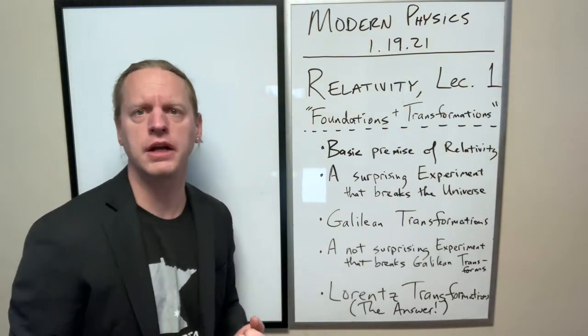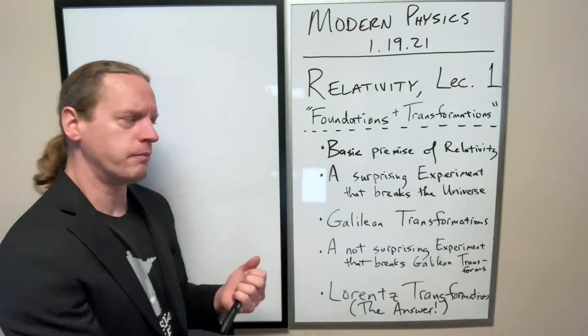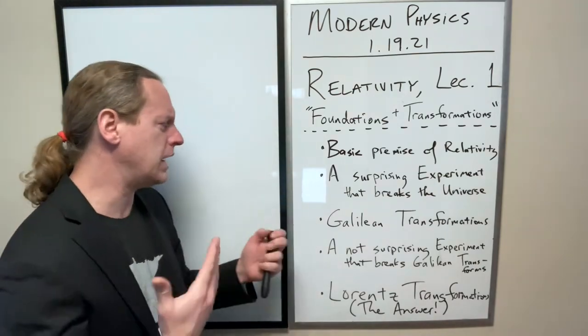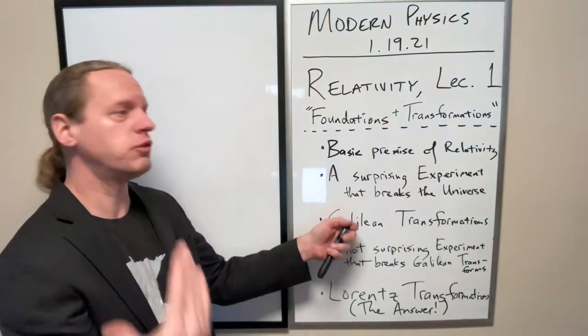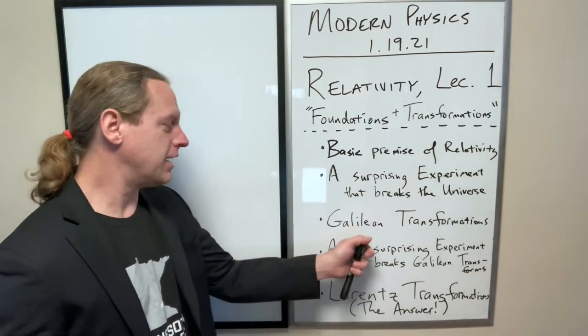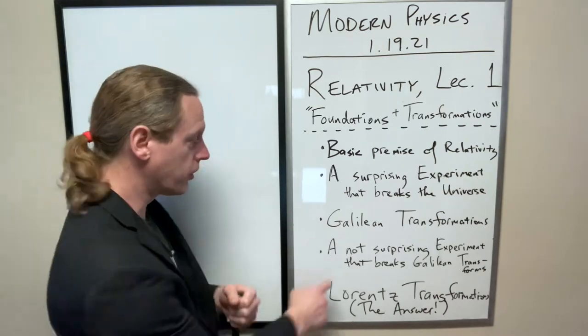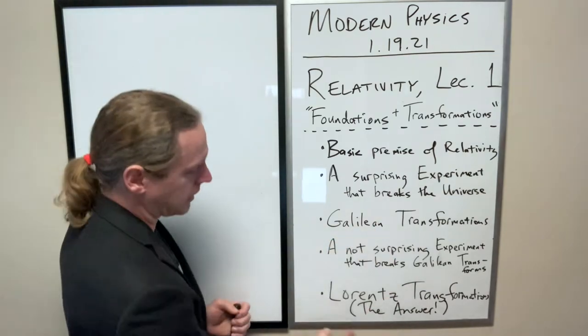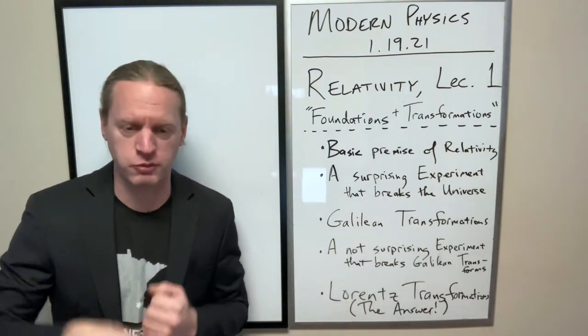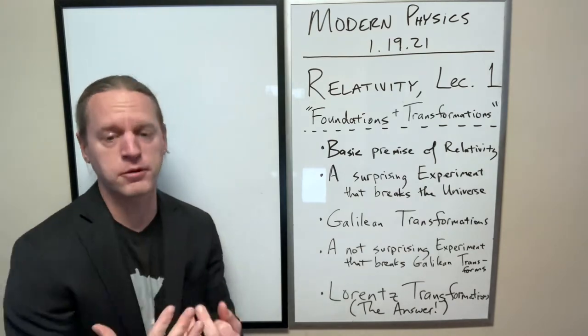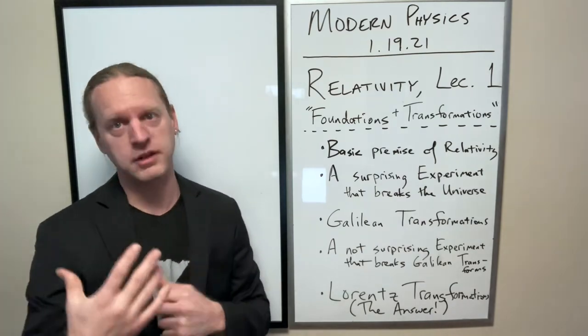This you might have seen in a Physics 1 demonstration and so it does provide one solution for how to fix that, except we come across another experiment that seems to completely rule this out. So we're going to get to finally the Lorentz transformations, which turns out is the appropriate way to do these transformations.